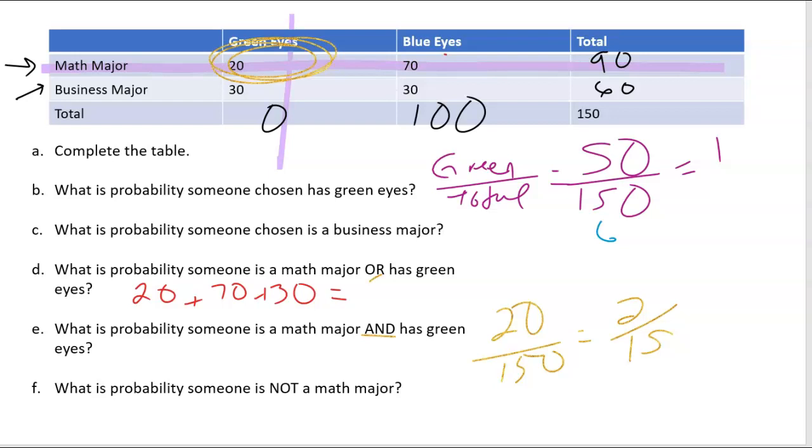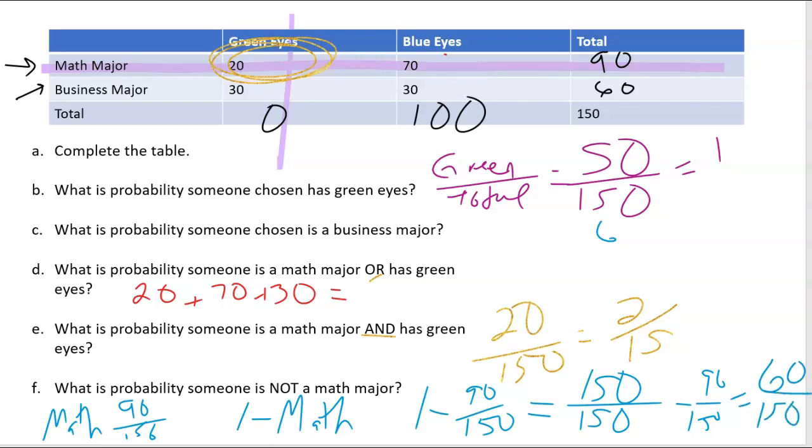Let's look at letter F. What is the probability someone is not a math major? Well, there are 90 out of 150 who are math majors. That means everybody else is not a math major. So to find not math, we would take one minus the probability of the math majors. So I would take one minus 90 over 150, which if you think of this in terms of fractions, 150 over 150 is the same as one minus 90 over 150 gives me 60 over 150.